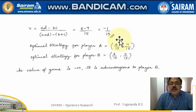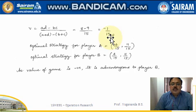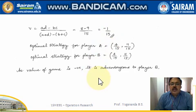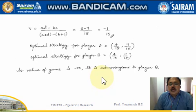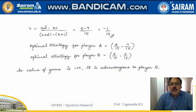If the value of the game is positive, we say the game is favorable to player A. If the value of the game is negative, we say the game is favorable to player B.